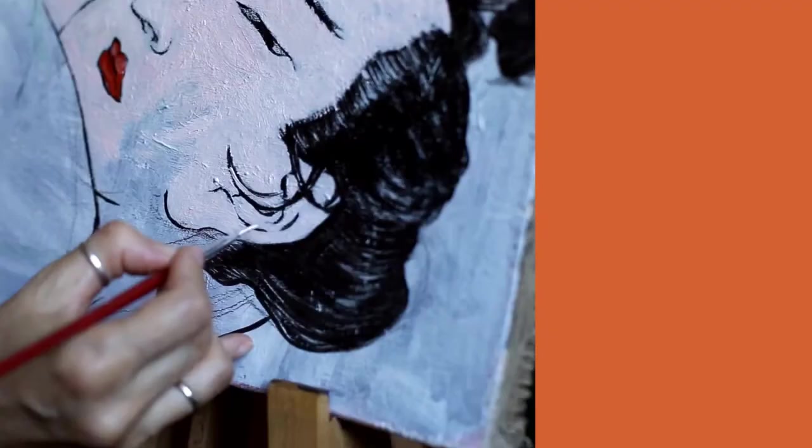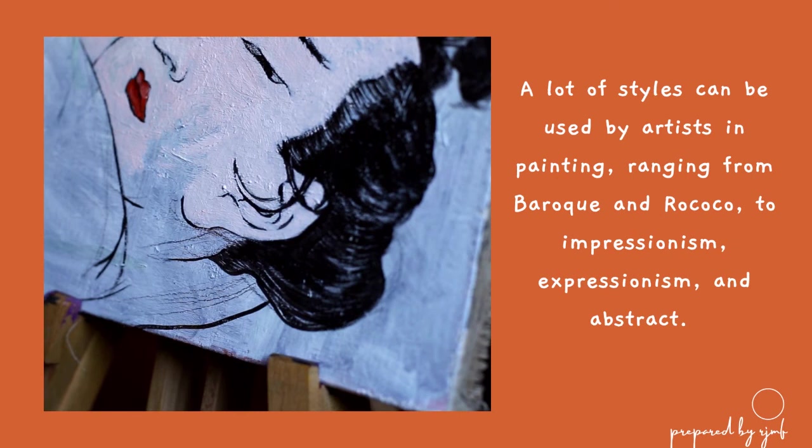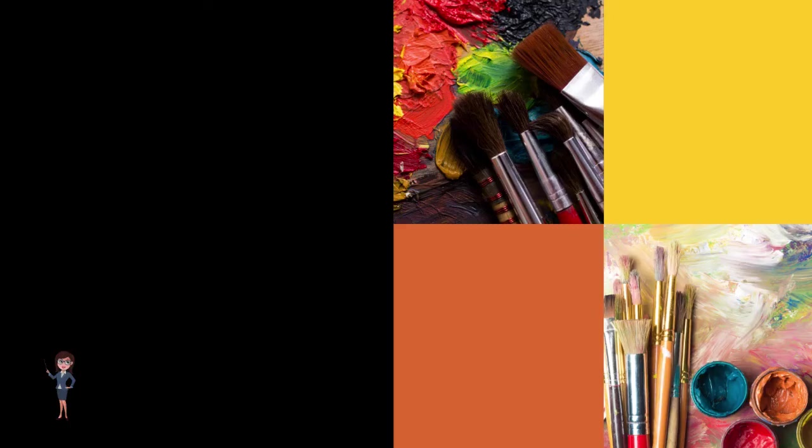A lot of styles can be used by artists in painting, ranging from Baroque and Rococo to Impressionism, Expressionism, and Abstract. In this lesson, we discussed painting, specifically its forms and themes. That is the end of our lesson. Thank you for watching.